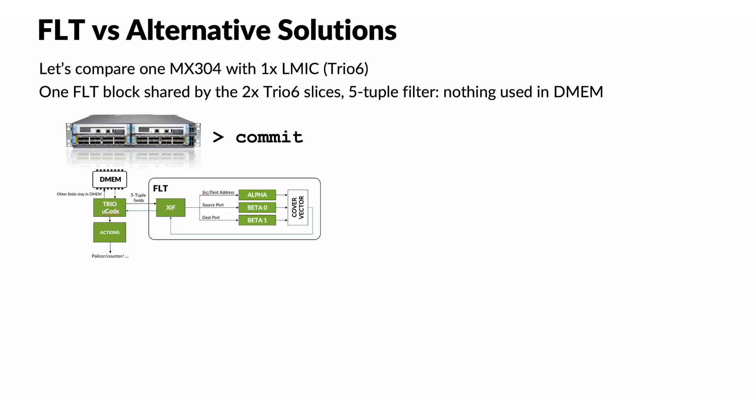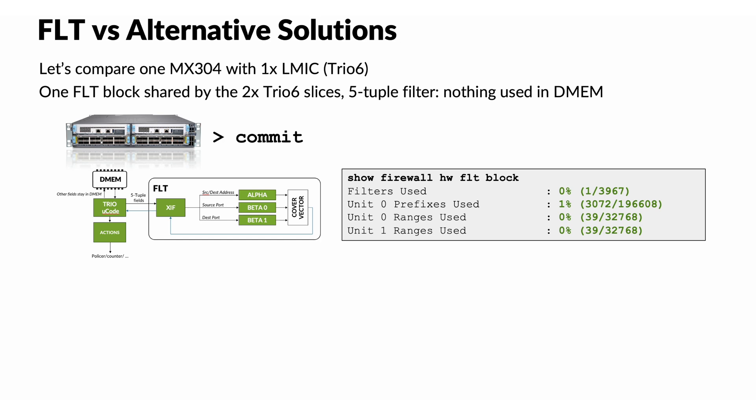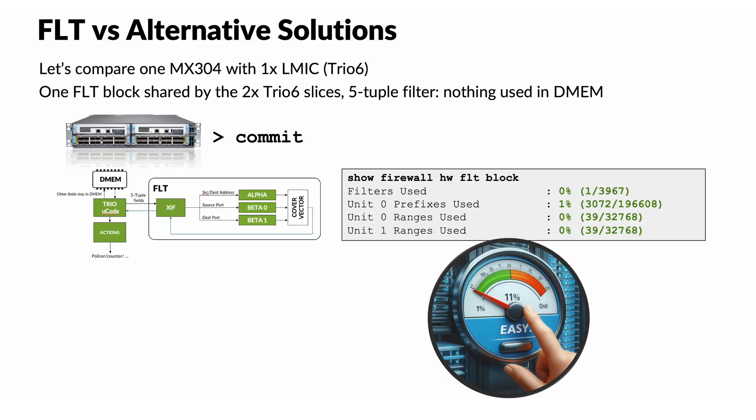Now let's commit this filter as an FLT filter on the TRIO 6 of our MX304. Since our filter consists only of 5-tuple terms, nothing is stored in the DMEM. After committing, we can monitor FLT memory consumption. That was easy — thanks to our secret sauce, we are using only 1% of the alpha block and almost nothing in beta. This is just one simple example where Juniper clearly stands out as the best solution.